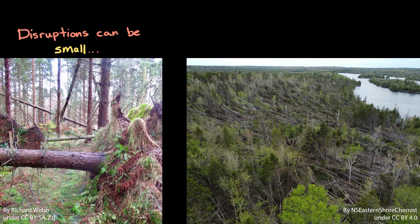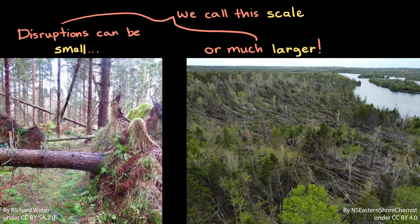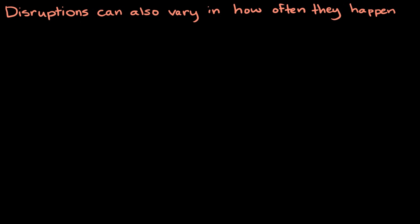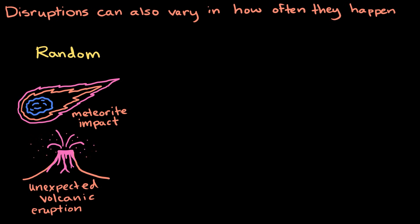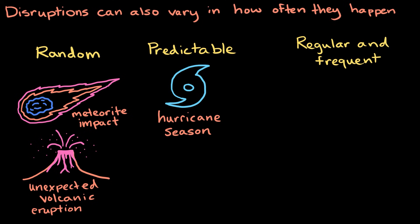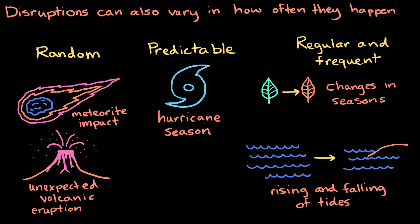Disruptions can be small, like a single tree falling during a storm, or much larger, like hundreds of trees knocked down by a wind throw. We call this scale. Disruptions can range from small, localized events to major, global ones. Disruptions can also vary in how often they happen. Some disruptions are random, like a meteorite impact or an unexpected volcanic eruption. Others are much more predictable, like the start of hurricane season. And some are regular and frequent, like the changes in seasons or the rising and falling of tides every day in coastal areas.